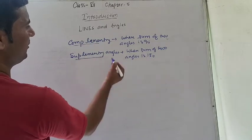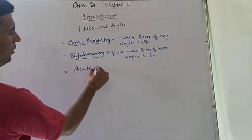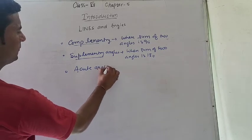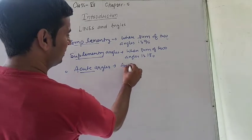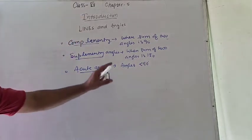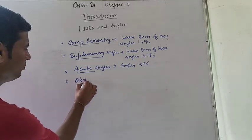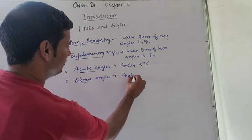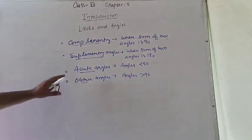Now some different types of angles. First is acute angles — angles less than 90 degrees are called acute angles. Then obtuse angles — angles which are greater than 90 degrees are called obtuse angles.